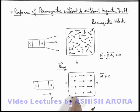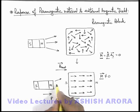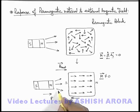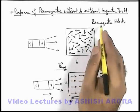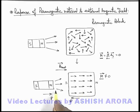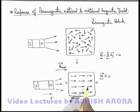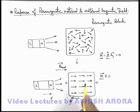This is unlike the case of a diamagnetic material, where on application of an external magnetic field the diamagnetic material repels the external field. Whereas a paramagnetic material attracts the external magnetic field, or it has a tendency to produce a magnetic field in the same direction as that of the external field. This is how a paramagnetic material behaves when placed in an external magnetic field.